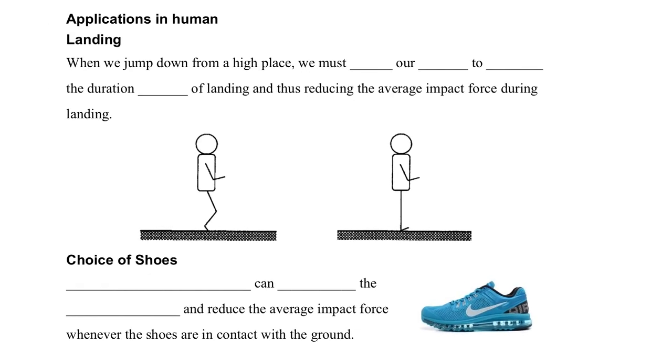What are the applications of this? Let's consider the application in humans. For a person landing, that means after he jumps from a high place, if he bends the knees to increase the impact time, then he will experience a smaller impact force. In reverse, if he just touches the ground without bending the knees, then he will have a very short impact time. As a result, he will experience a larger impact force.